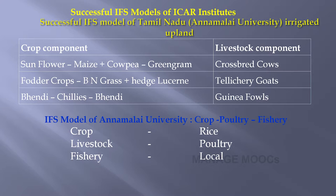A third recommendation from the university combines horticulture crops — bhindi and chili — with guinea fowl as the poultry variety. Another Annamalai University model for crop, livestock, and fishery recommends rice as the crop, combined with poultry and local varieties of fish as an integrated farming system.